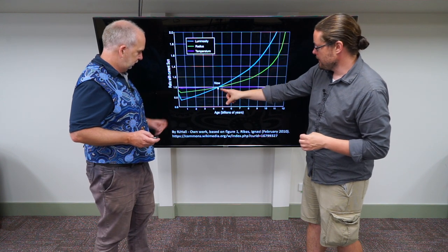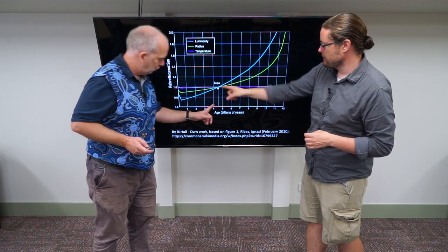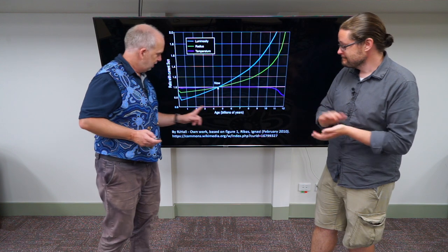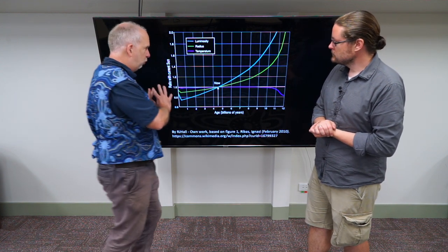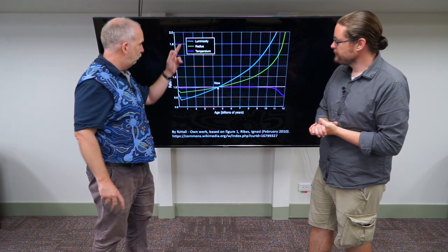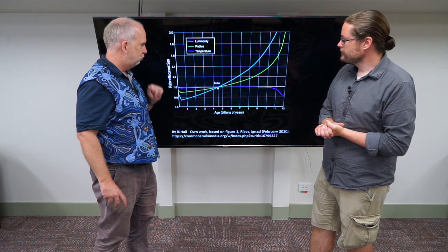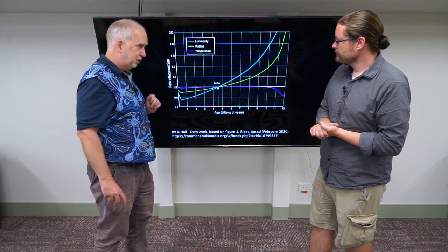So today, this is what we're essentially measuring. So we're about 4.6 billion years, and what's happened, and this is the result of these models, predicting how the luminosity, the radius, and the temperature of the sun change with time.